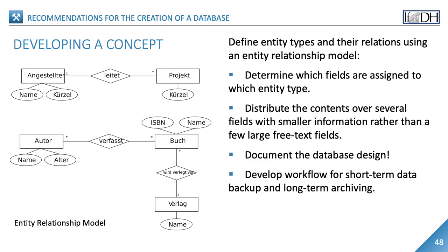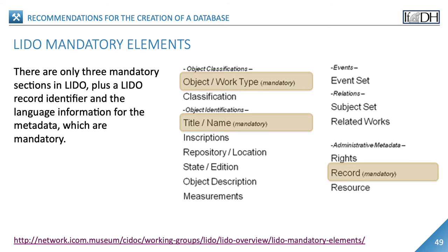Develop a workflow for short-term data backup and long-term sustainable archiving of data. For collection objects, the Documentation Working Group of the International Council of Museums, ICOM, has developed the LIDO scheme. LIDO — the abbreviation for Lightweight Information Describing Objects — is an XML scheme for exchanging and providing metadata on museum and collection items. Only three mandatory sections are defined there: the object or work for classifying the object, the title or name for identifying the work, and the directory for the administrative metadata. In addition, the LIDO record identifier and the language information for the metadata are mandatory.